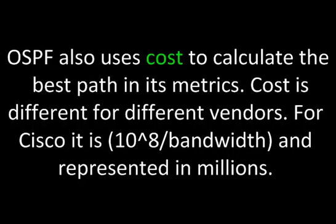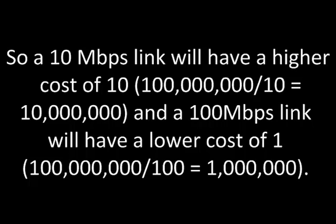OSPF also uses cost to calculate the best path and its metrics. Cost is different for different vendors. For Cisco, it is 10 to the power of 8 divided by bandwidth, represented in millions. So a 10 megabit per second link will have a higher cost of 10, that is 100 million divided by 10 equals 10 million, and a 100 megabit per second link will have a lower cost of 1, that is 100 million divided by 100, or 1 million.